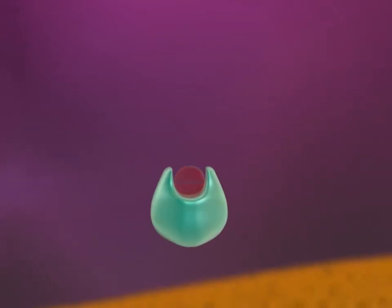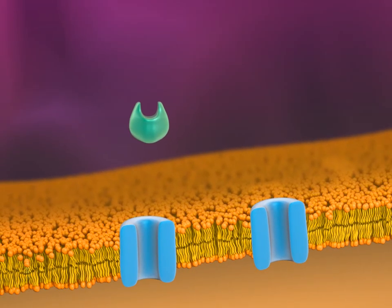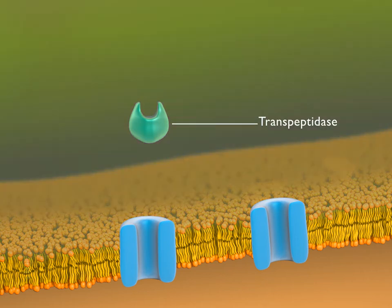Let's take a closer look at what is happening. Penicillin's target is the bacterial enzyme transpeptidase, located outside the plasma membrane of the cell.